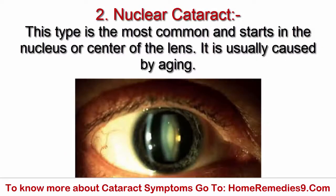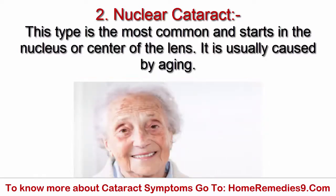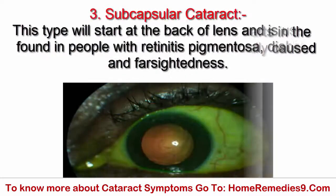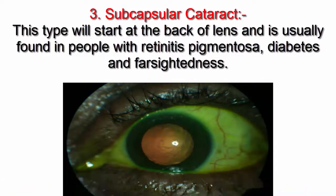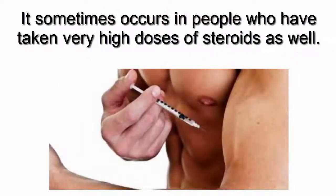2. Nuclear Cataract: This type is the most common and starts in the nucleus or center of the lens. It is usually caused by aging. 3. Subcapsular Cataract: This type will start at the back of the lens and is usually found in people with retinitis pigmentosa, diabetes, and farsightedness. It sometimes occurs in people who have taken very high doses of steroids as well.